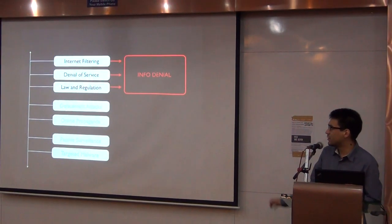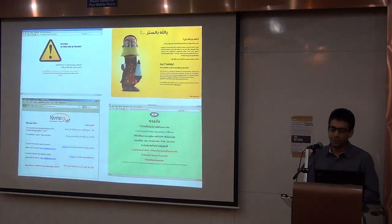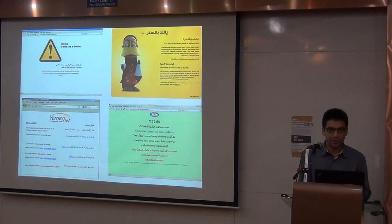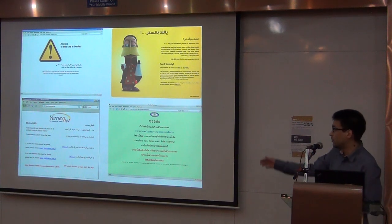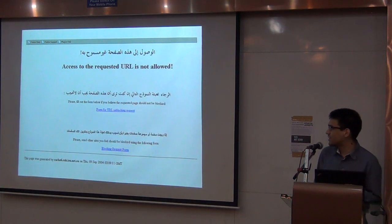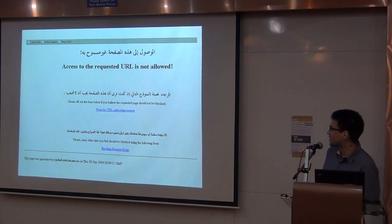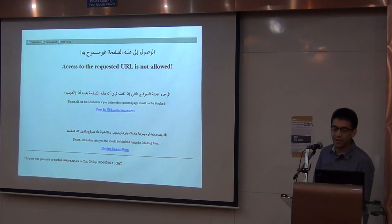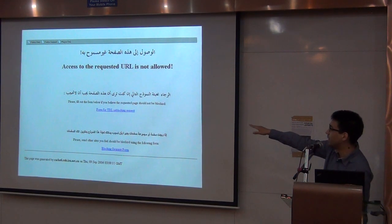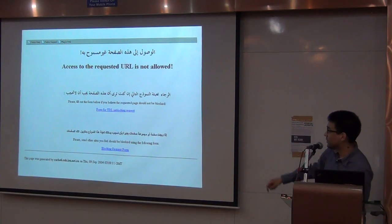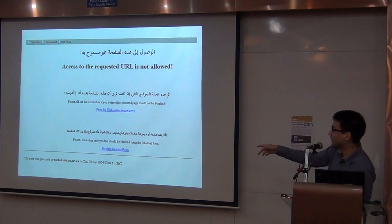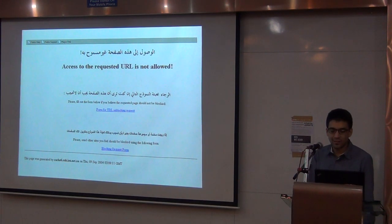Some information controls are designed to deny information. Perhaps the most common example is internet censorship. In many countries around the world, when you try to access certain content online, you're greeted with a block page. Countries differ in what they put on their block pages. This is an example from Saudi Arabia: it says 'access to this URL is not allowed,' but also gives users a way to interact with authorities — asking them to fill out a form if they believe the page should not be blocked, or to report other sites they feel should be blocked.